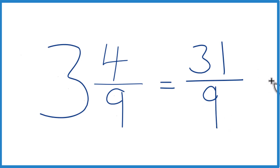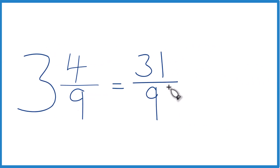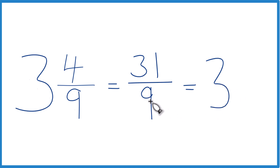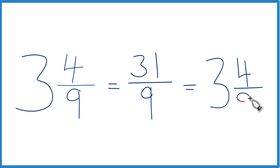We could check our work too, because 9 goes into 31: 3 times 9 is 27, and we'd have 4 left over — bring the 9 across. That's what we started with.